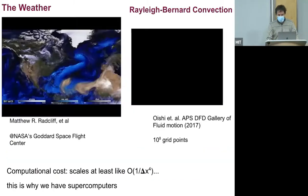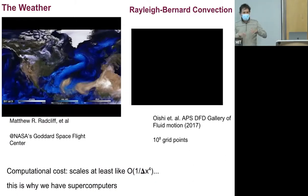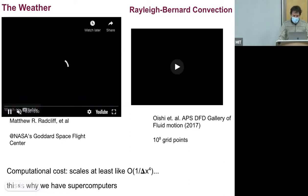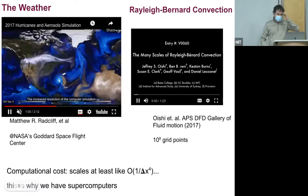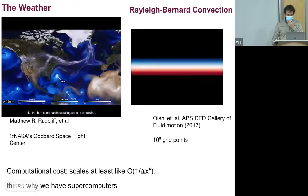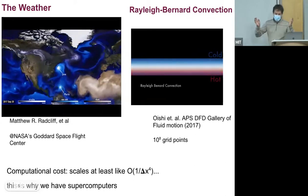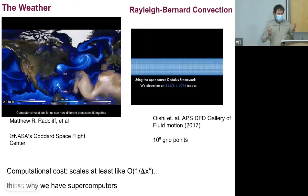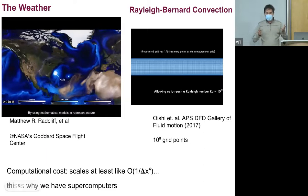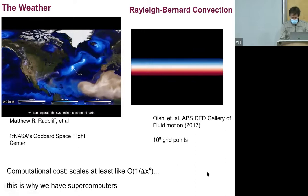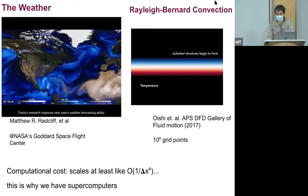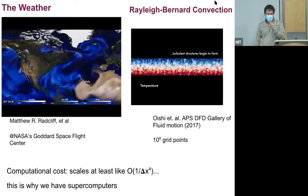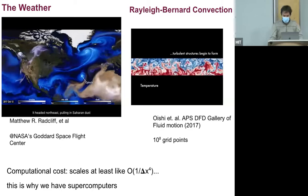One of the main accomplishments of applied mathematics in the 20th century was figuring out how to parameterize complex solution manifolds in a way that was both sensible and computationally efficient. But honestly, this hasn't worked very well. If you look at any reasonable flow of any reasonable complexity—like a NASA simulation of the 2017 weather season or Rayleigh-Bénard convection—the number of grid points required is extremely large, and the computational cost scales at least like one over the mesh spacing to the fourth power.